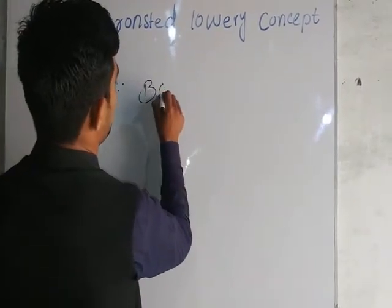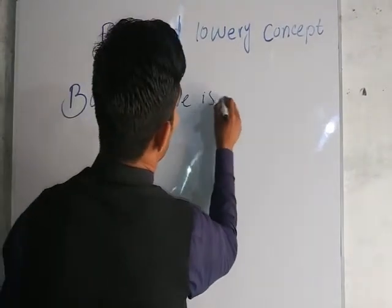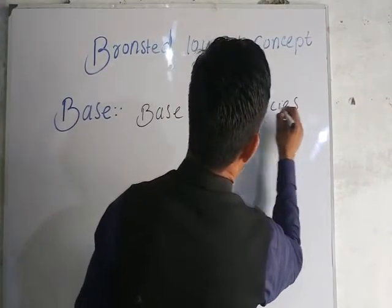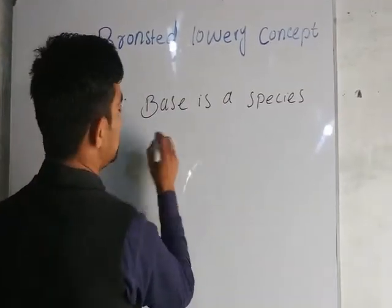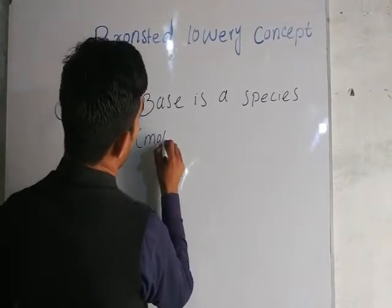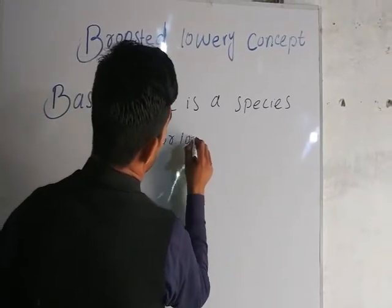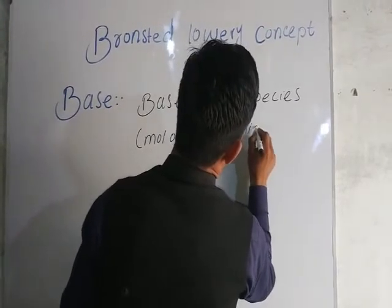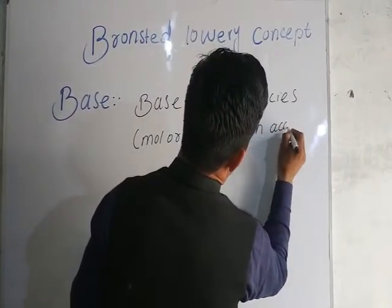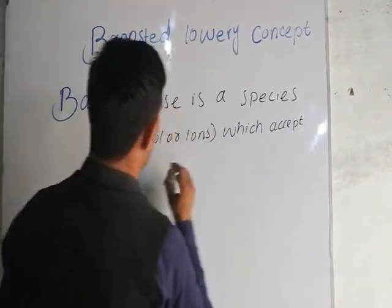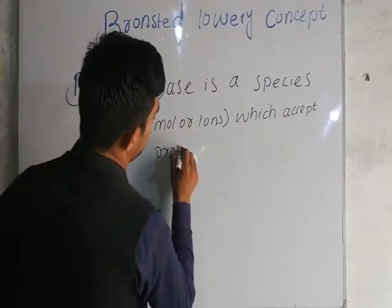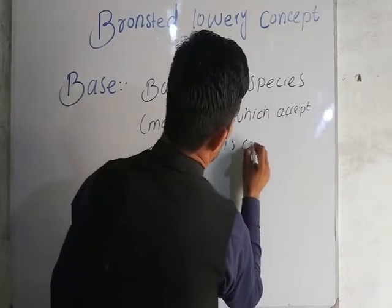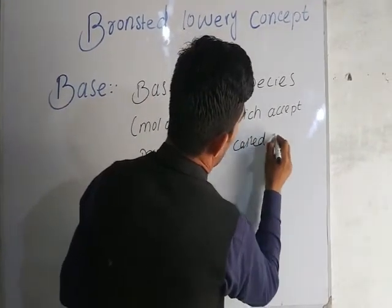A base is a species — which means molecule — that accepts a proton. Proton means hydrogen ion. It is called a base.